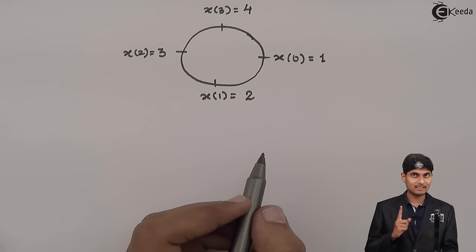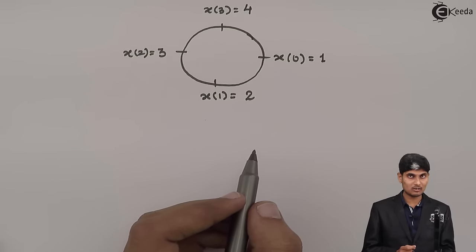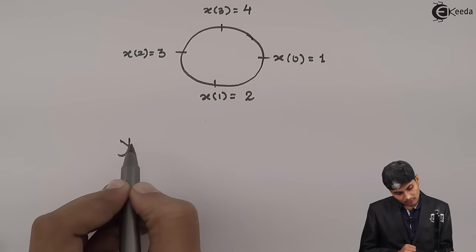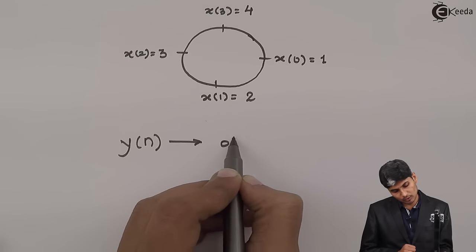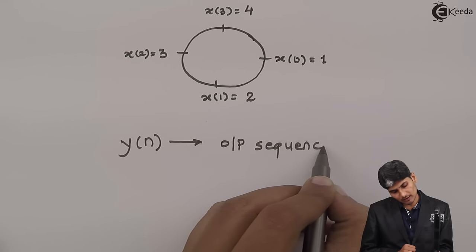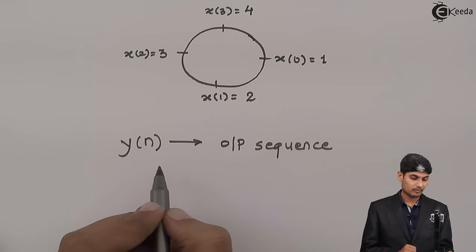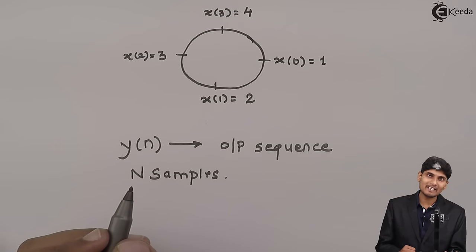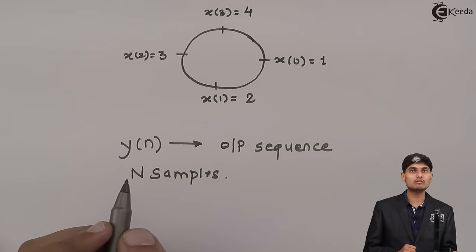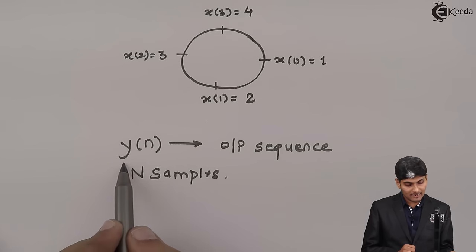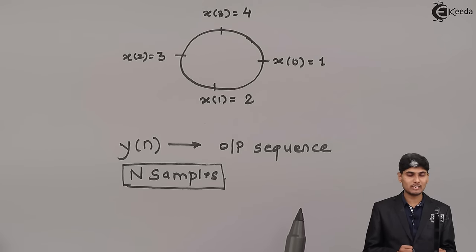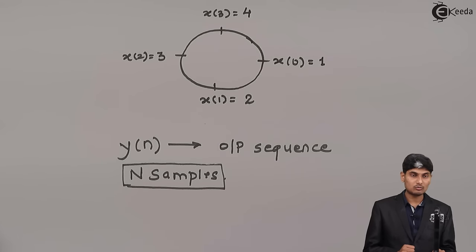Both sequences x of n and h of n have the same sequence length, or the same period, that is 4. Then y of n, the output sequence after convolution, will also have N samples. Unlike linear convolution, here in circular convolution we will have N samples in the output. If x of n has 4 samples and h of n also has 4 samples, then y of n will have 4 samples as well.